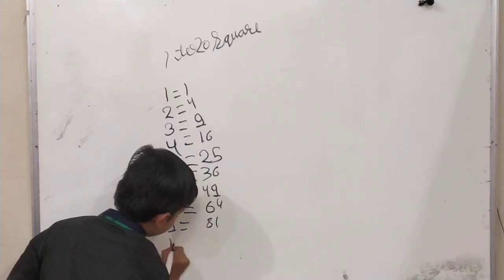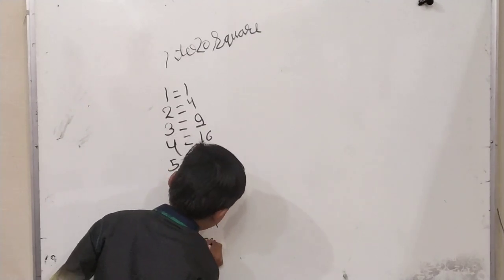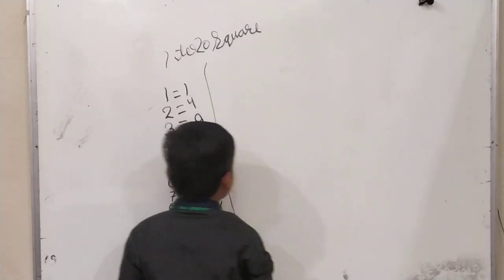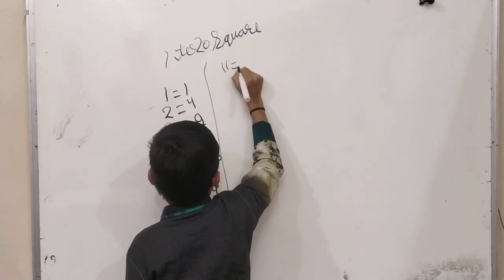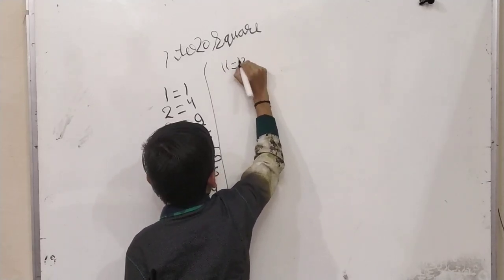Ten squared, one hundred. Eleven squared, one twenty-one.